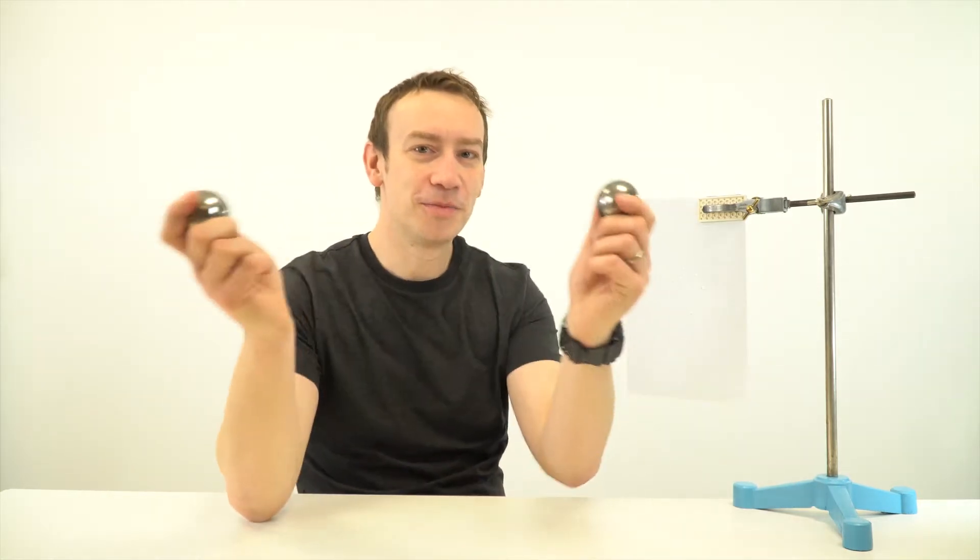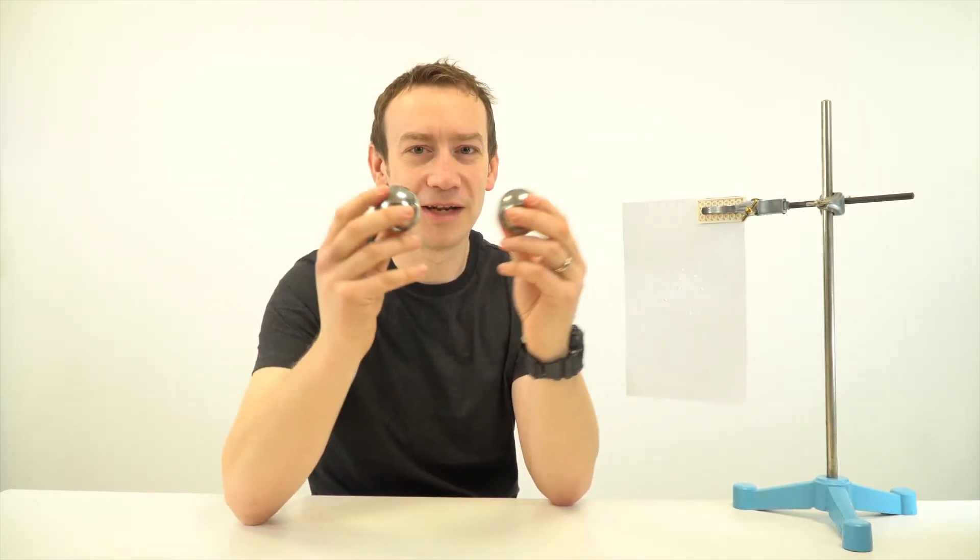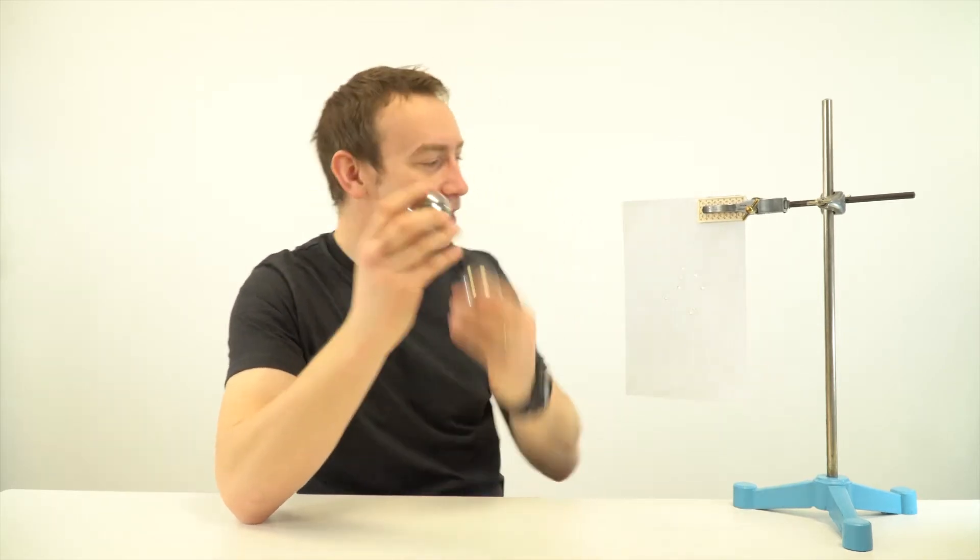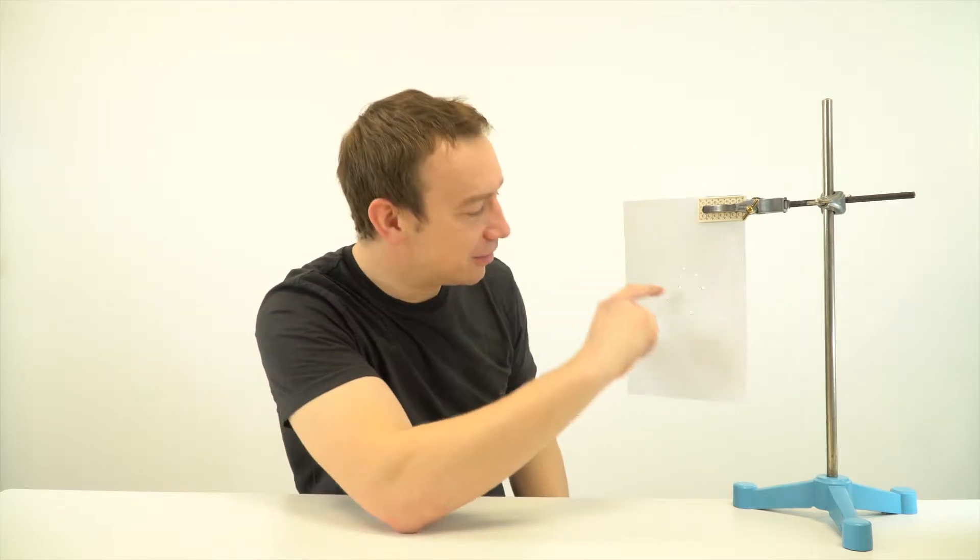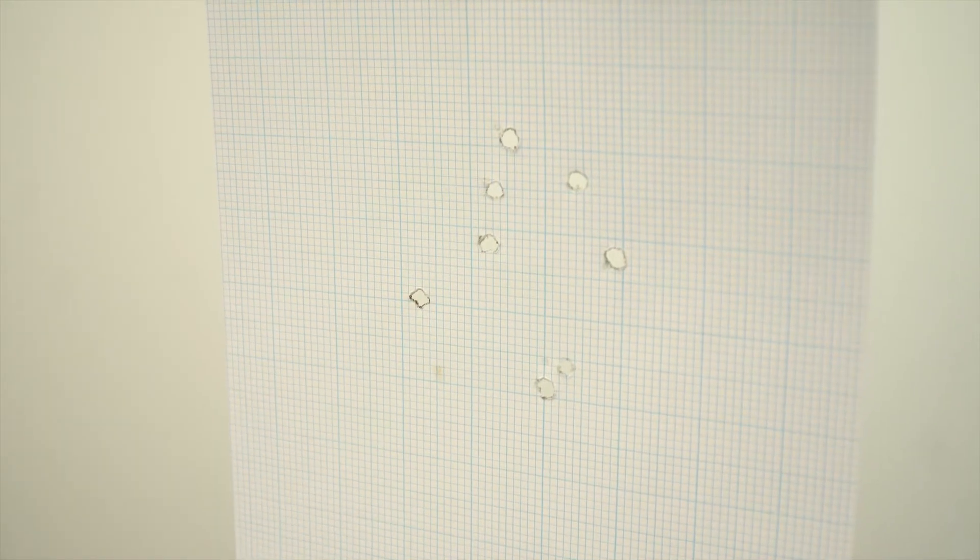Because as these two balls come together, because they're transferring their kinetic energy to thermal energy, they're actually heating up the piece of paper and actually burn it. And if you look closely you can see that around each of these holes there's a little singe mark.